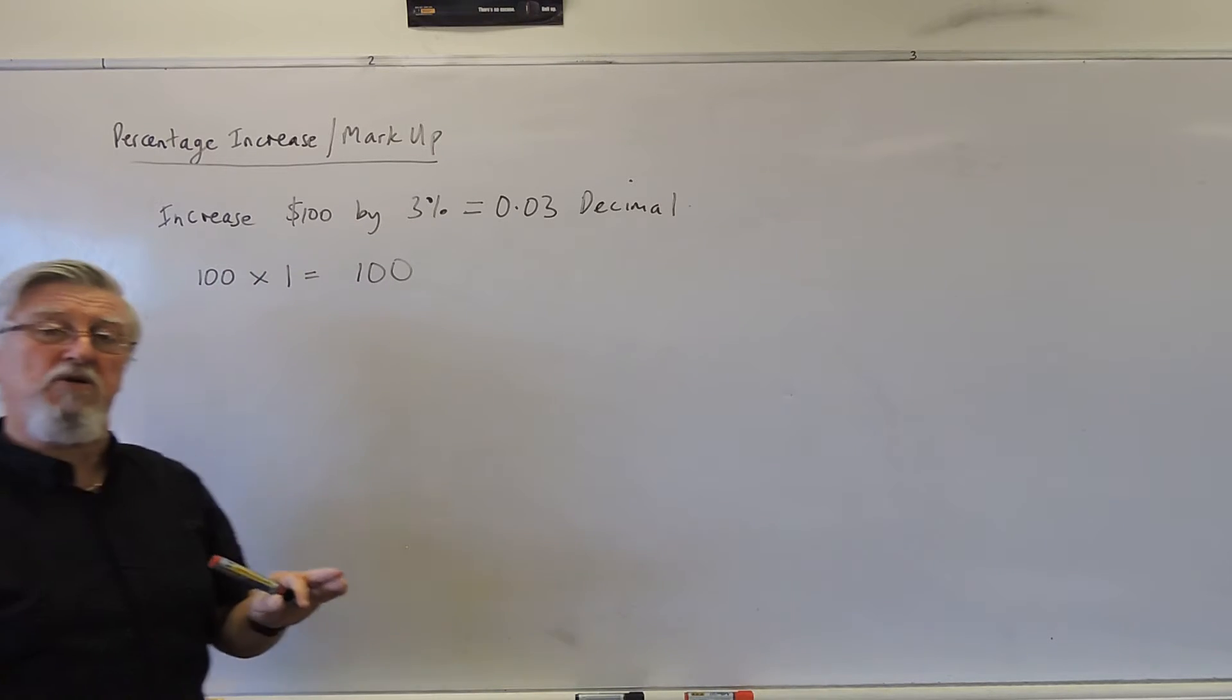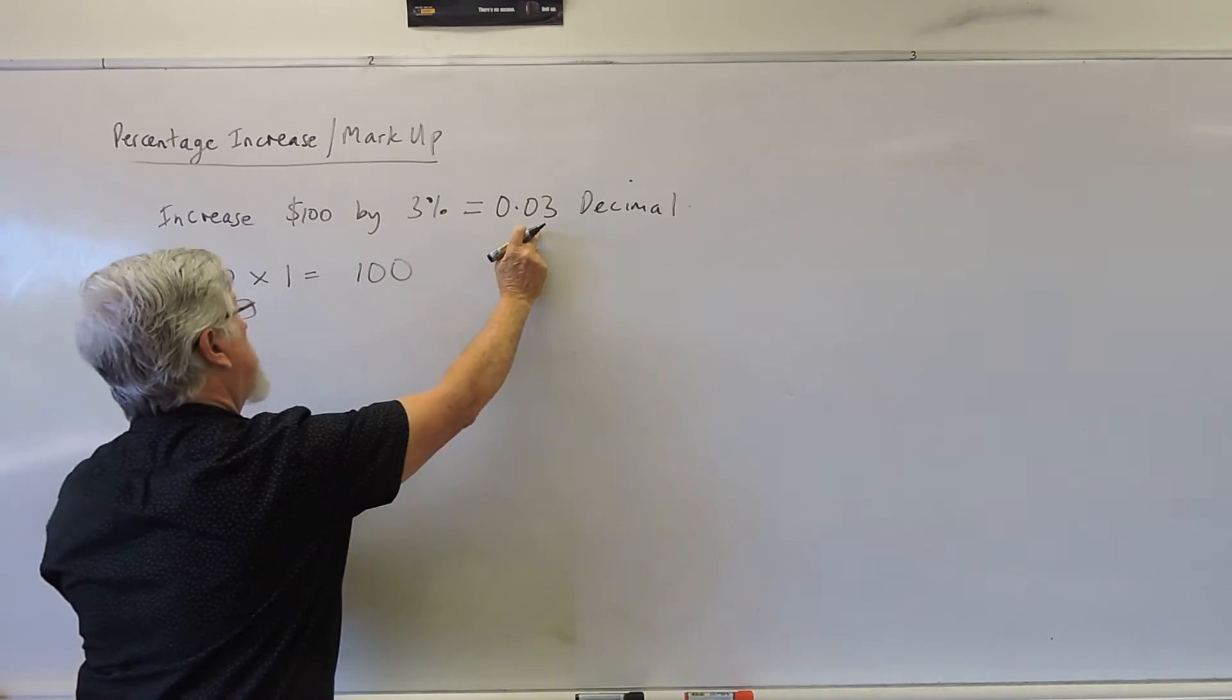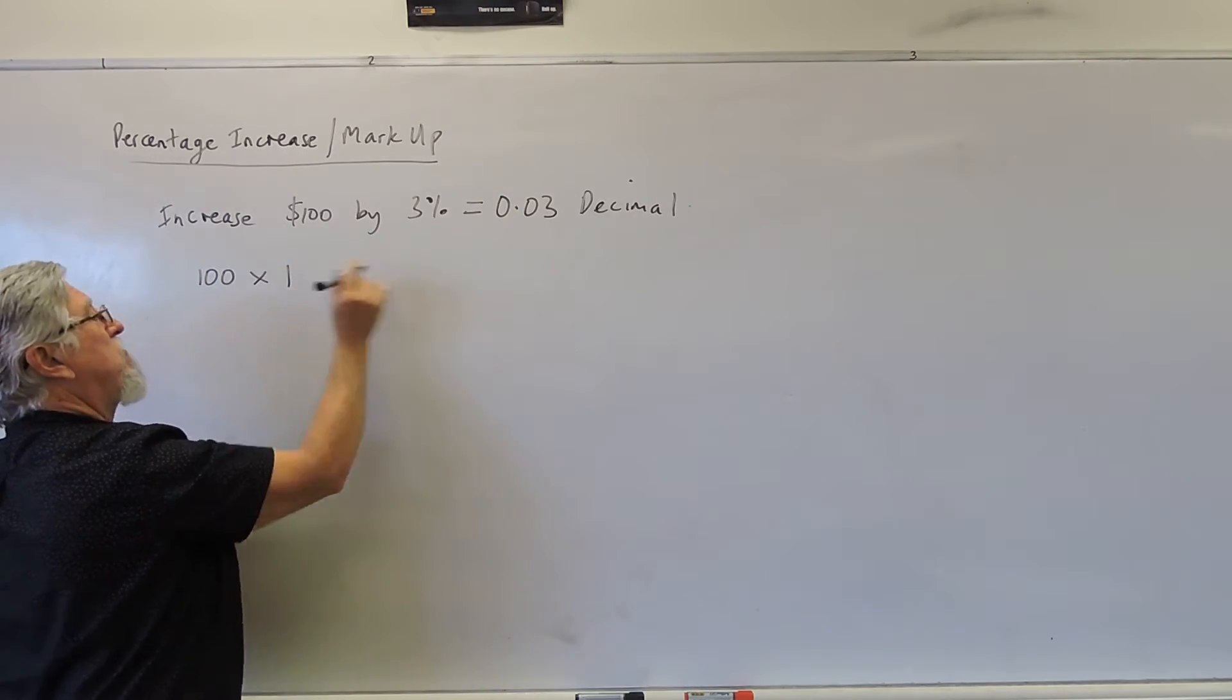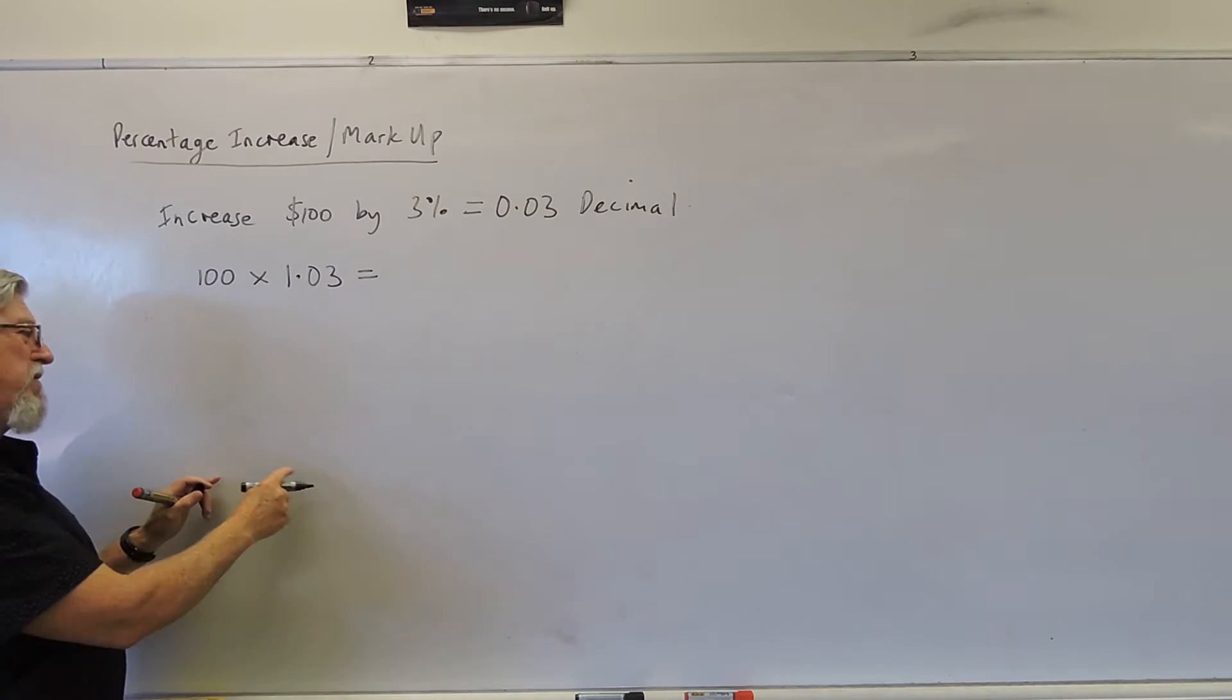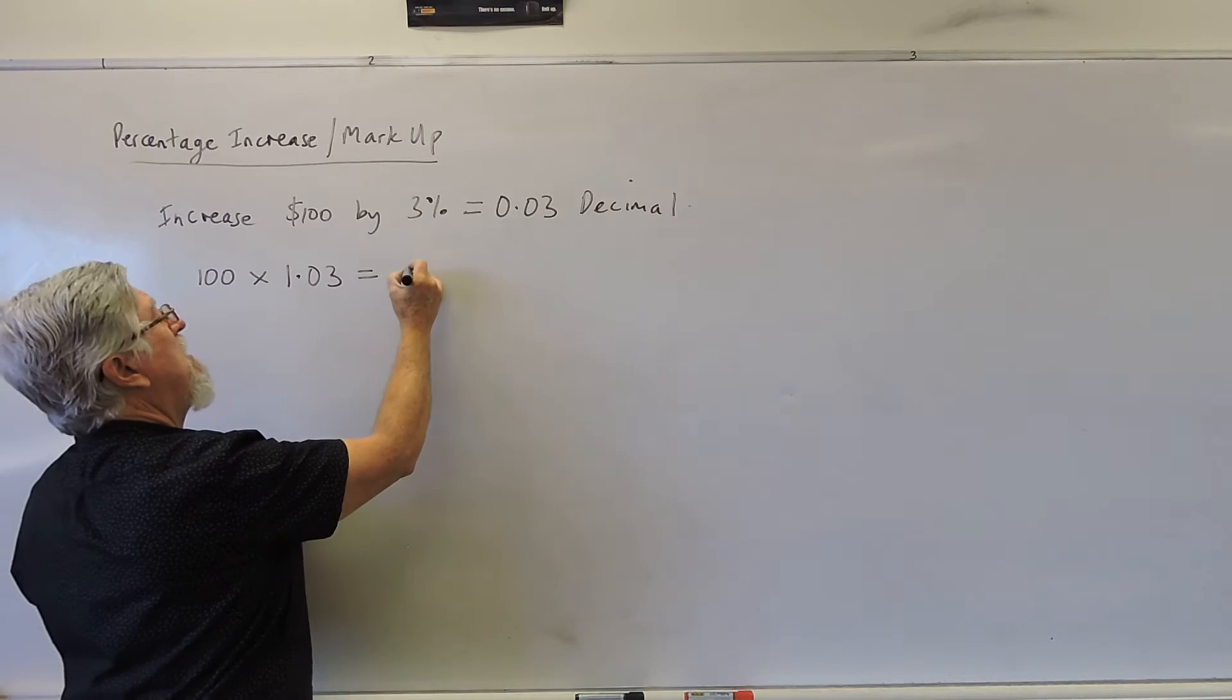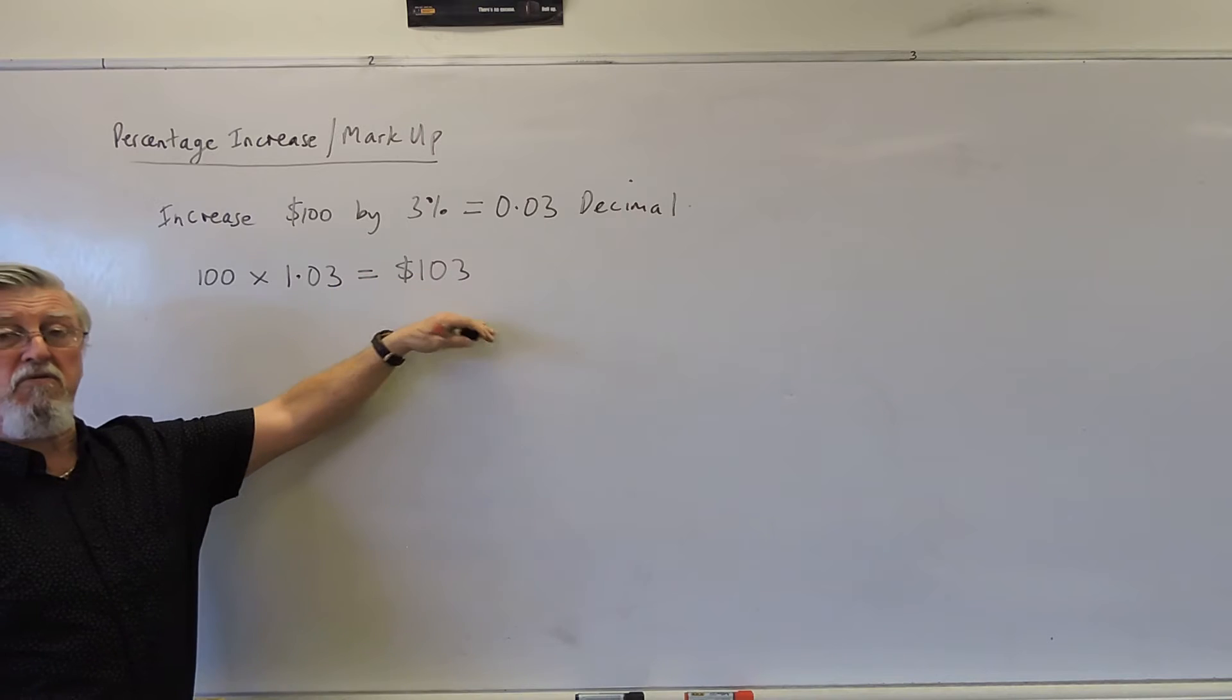But I said I want it to increase, I want it to get a little bit bigger. How much bigger? That much bigger. So if I multiply the 100 by 1.03 and pick up my calculator and type in 100 by 1.03, I get 103. So you can see the 100 that we started with and the extra 3.